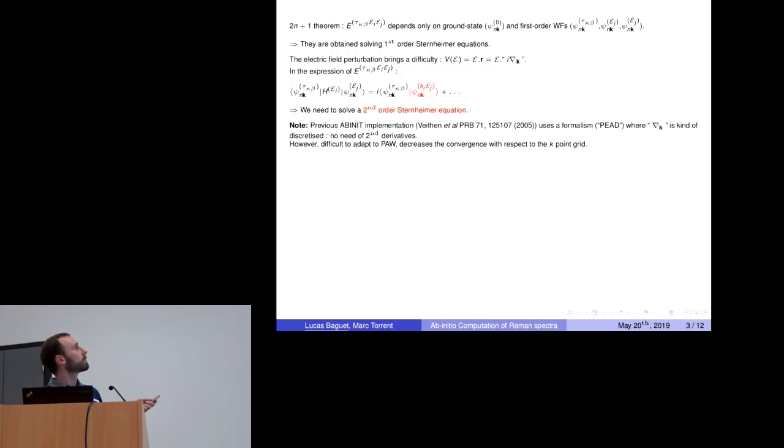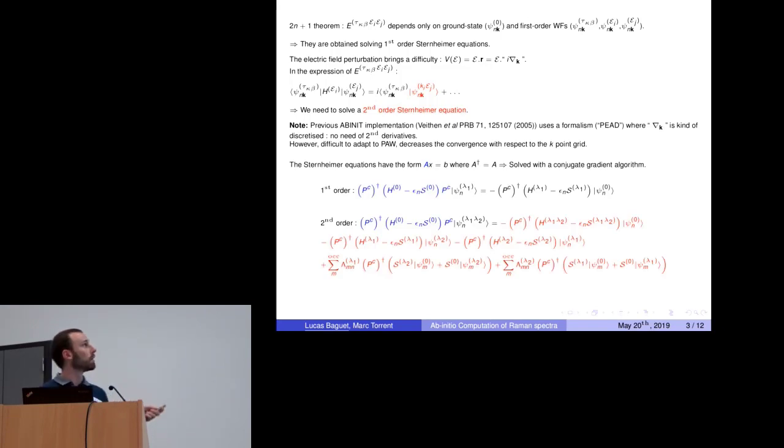So it is itself a derivative. That way, computing a scalar product like this, which contains only first order terms, in fact second derivatives of wave functions appear. So we need to solve the second order Sternheimer equations. In the previous Abinit implementation, the gradient operator was kind of discretized, so there was no need of such second derivatives. However, the formalism used was difficult to adapt to PAW and also it decreased the convergence with respect to the k-point grid. So we decided to implement second order Sternheimer equations.